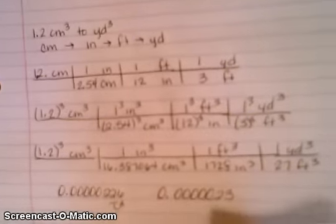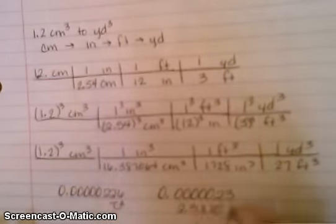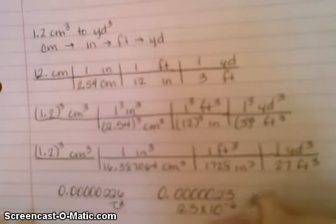Should you want to write it in scientific notation, you may do that as well. So that would be 1, 2, 3, 4, 5, 6, so it would be a negative 6, and this is going to be in cubic yards.